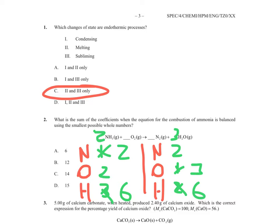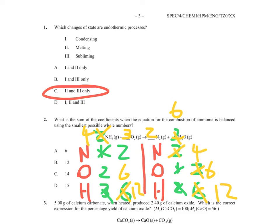Two and three both go into six, so put a three on the right side — now we have six oxygens. We need six oxygens on the left, so change that coefficient to six, giving us six oxygens but now twelve hydrogens. To get twelve hydrogens on the left-hand side, put a four there — that gives us four nitrogens. With two nitrogens on the other side, put a two there and it is balanced. Adding all coefficients: 6 + 4 + 3 + 2 = 15, and that is our answer.